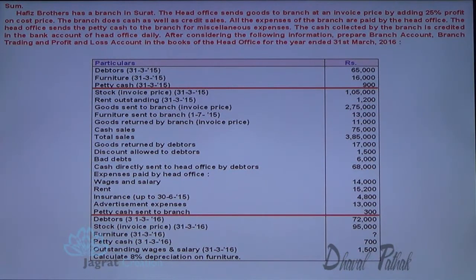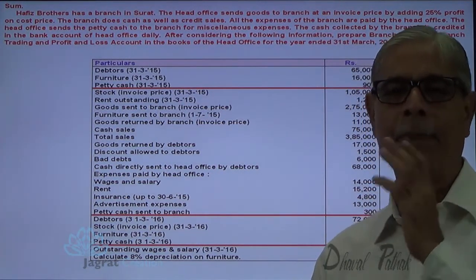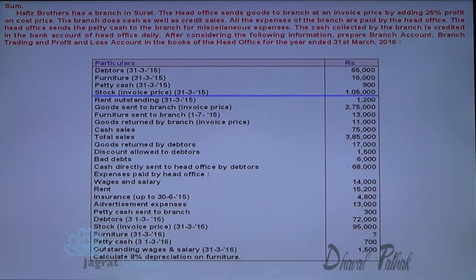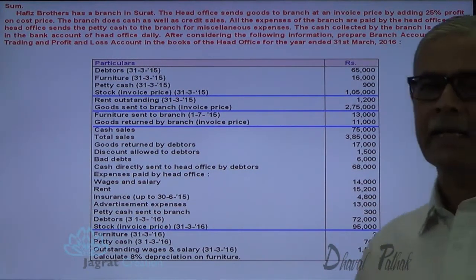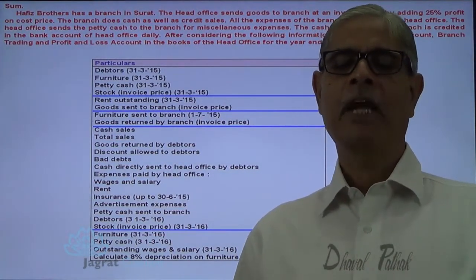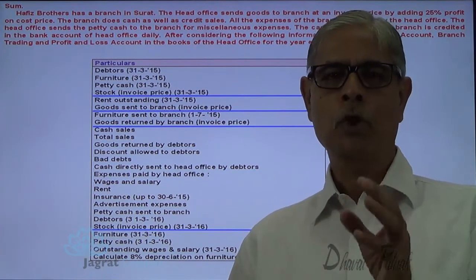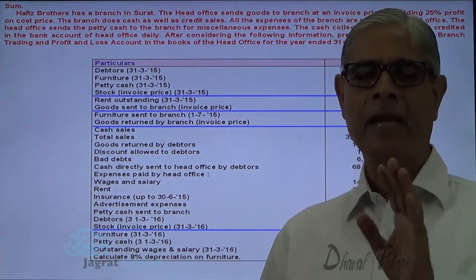Petty cash opening balance and cash sent to the branch are given, as is petty cash closing balance. So petty cash expenses incurred during the year are not given — we shall find them out by preparing a petty cash account. Stock is given at invoice price. Goods sent to the branch, goods returned by branch, and closing stock are all given at invoice price. We shall identify the profit element therein and record an adjustment entry, so that the branch account discloses opening stock, goods sent, goods returned, and closing stock all at cost.